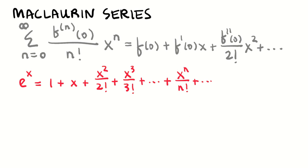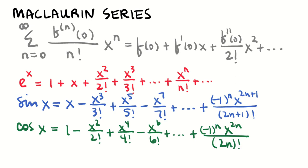We had the Maclaurin series for sine and cosine. Sine x is the one with the odd power and odd factorial terms, and cosine x is the one with the even power and even factorial terms.